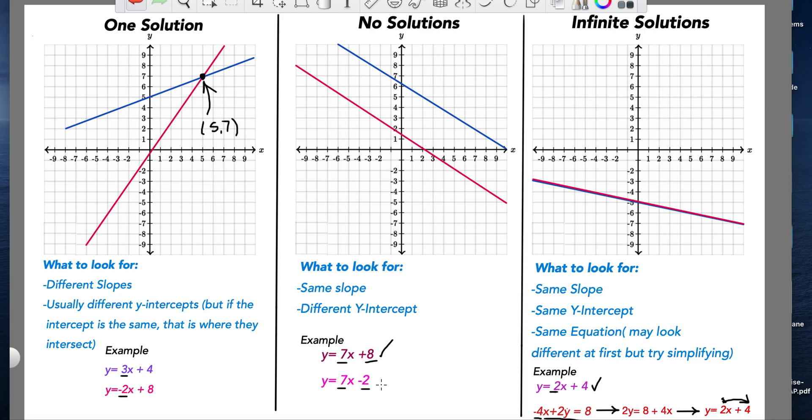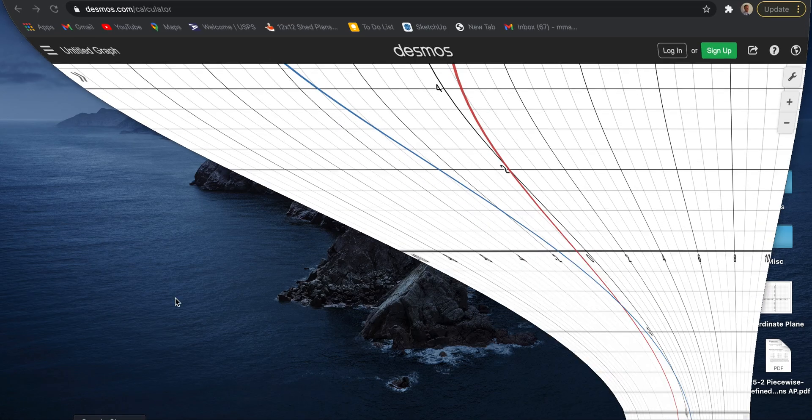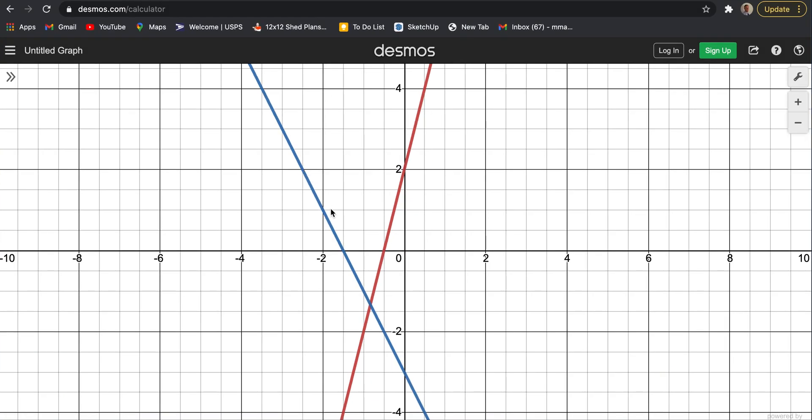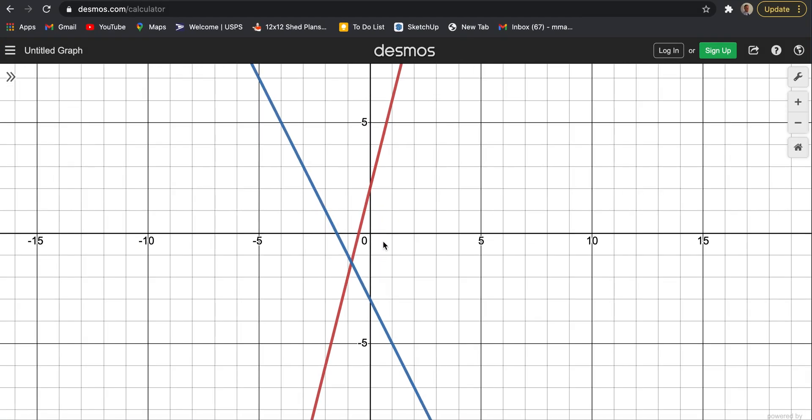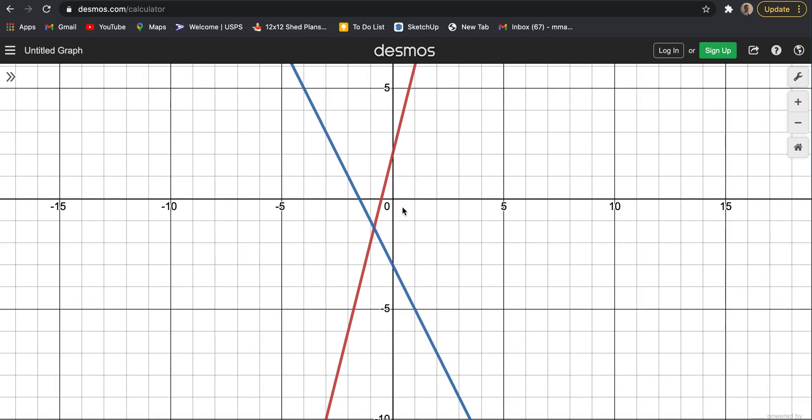So again, I'm going to have this cheat sheet kind of provided for you. It's an easy reference, but what I like to do is kind of show you on Desmos, how this kind of works. So Desmos is a graphing calculator app. I'm not sure if you've seen it before, but clearly these lines based on the last slide says that they'll have one solution.